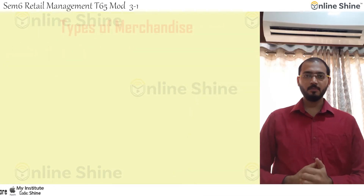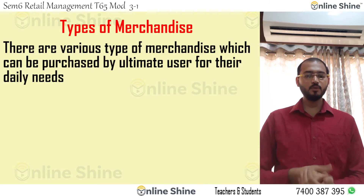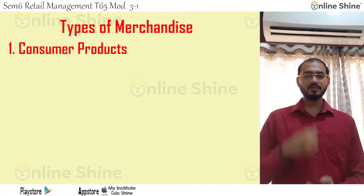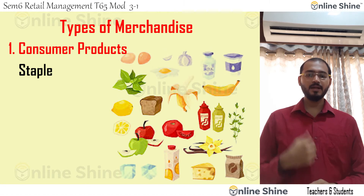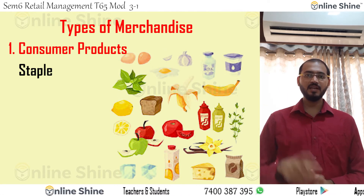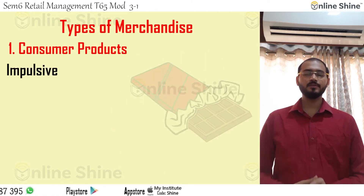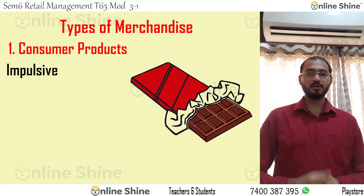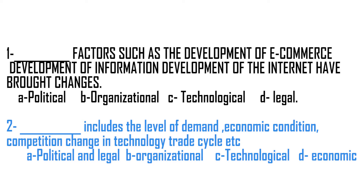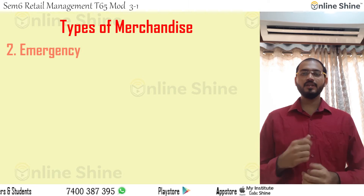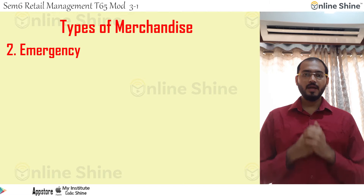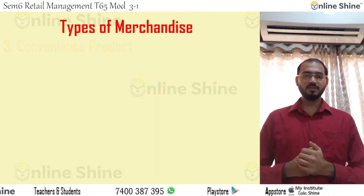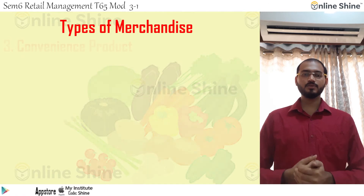Now we will see the types of merchandise. There are various types of merchandise which can be purchased by the ultimate user for their daily needs. These include: staples — products needed daily such as bread, milk, grocery, and eggs; impulse — instant purchases like chocolates, which you don't need daily but may buy on impulse; and emergency — products purchased in urgent need, such as medicine during a medical emergency.